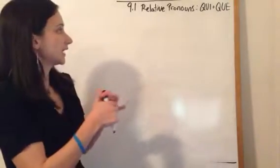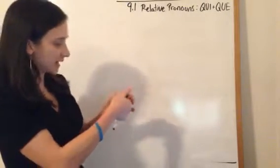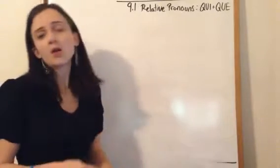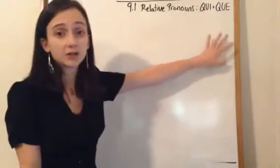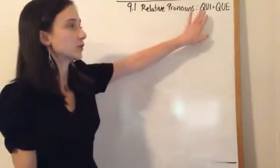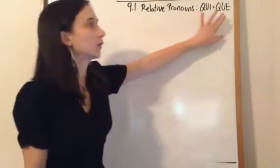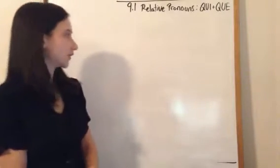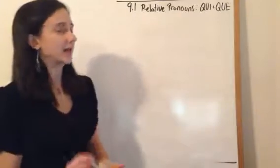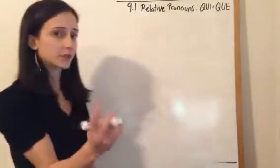So, we have qui and que, and you'll see this in English for the words like which or that. Now, the only difference between qui and que is not, which you might want to say, who or what. It's not that. It's whether it's used as the subject in a sentence or whether it's used as a direct object. So, that's what we're going to divide it into.